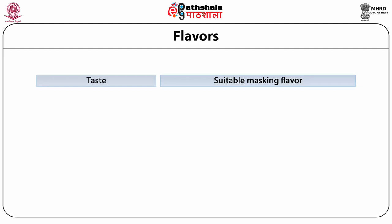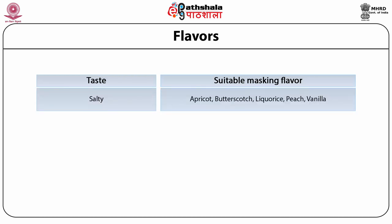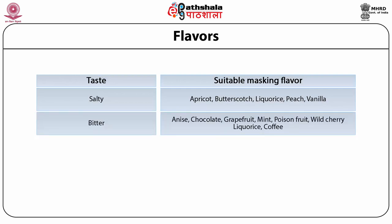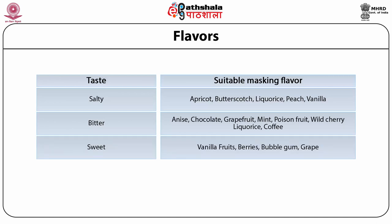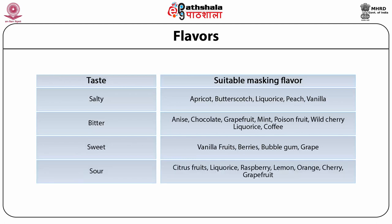For masking salty taste, suitable flavors include apricot, butterscotch, liquorice, peach, or vanilla. For masking bitter taste, suitable flavors include anise, chocolate, grapefruit, mint, passion fruit, wild cherry, liquorice, and coffee. For masking sweet taste, vanilla, fruit flavors, berries, bubble gum, and grape can be incorporated. For masking sour taste, citrus fruit flavor, liquorice, raspberry, lemon, orange, cherry, and grapefruit flavors may be incorporated.